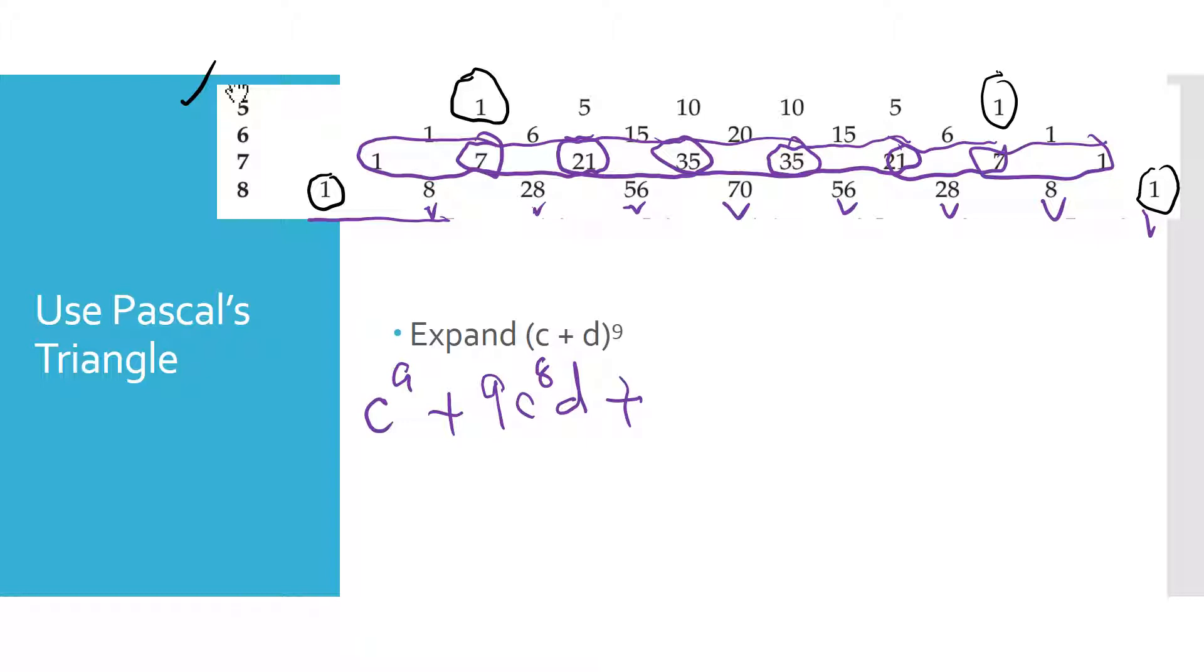plus, and let's see, 8 plus 28, 8 plus 28 is 36. So we've got 36, C to the 7th, D squared, plus, let's see, 28 plus 56, 4 carry 1, 84, 84, C to the 6th. Notice our exponents on the C's are declining each time we write a term, D to the 3rd. And the coefficient of D here in this example is increasing.